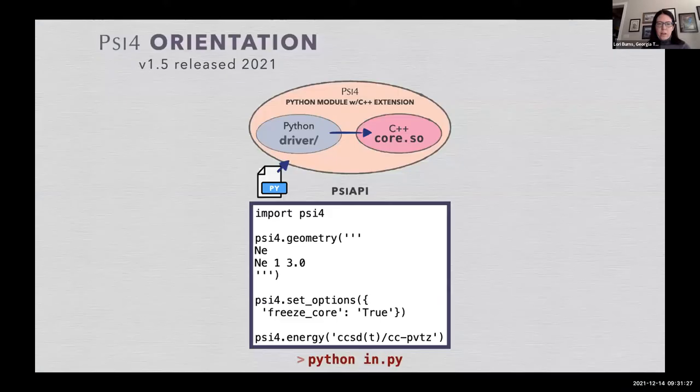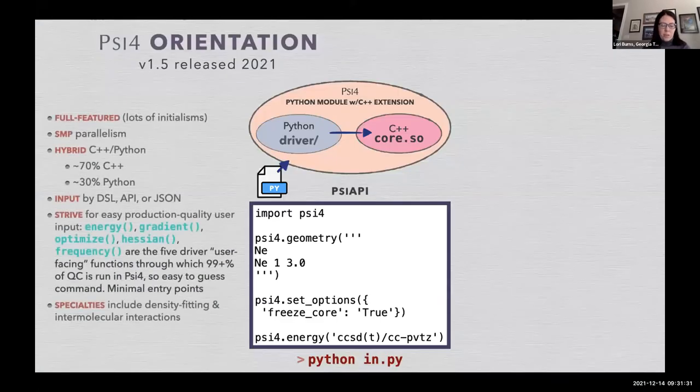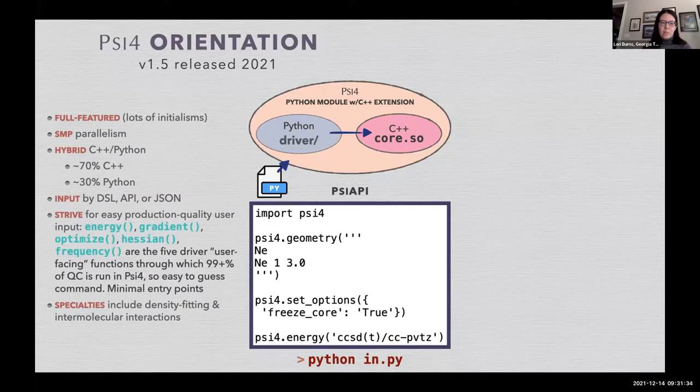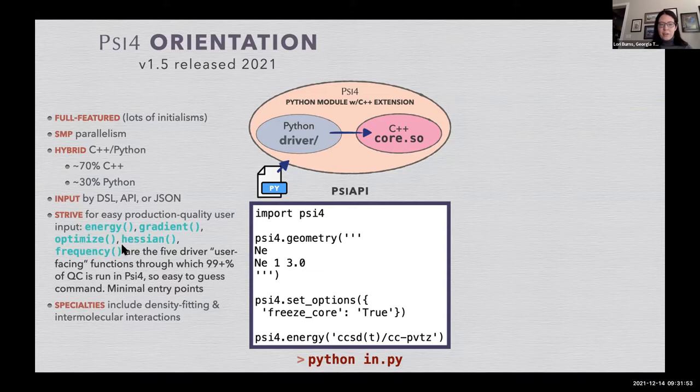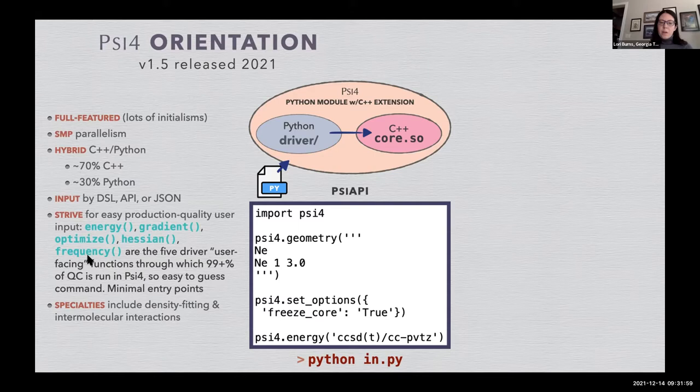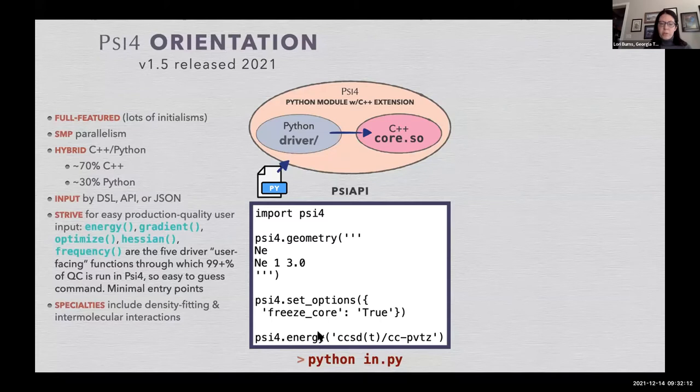For a quick introduction to Psi4, it is a quantum chemistry program written in C++ and Python, with the computationally demanding portions in C++ and a Python driver to coordinate them all. We strive for easy user input through five main functions: energy, gradient, optimize, hessian, and frequency. Because this is a Python extension module, the native input is in Python. You could do something like import Psi4, define a geometry, define any options, and then run a model chemistry through the energy function.